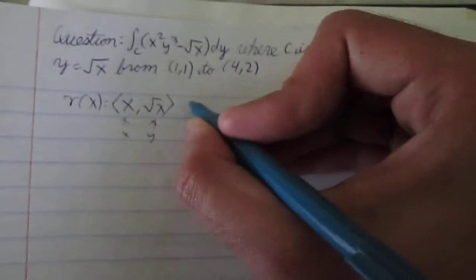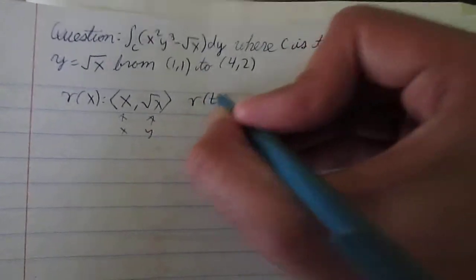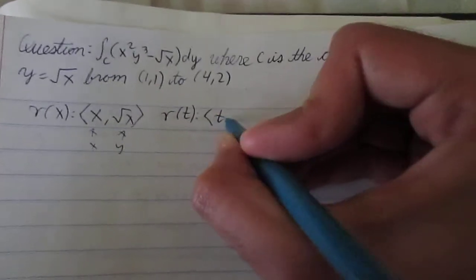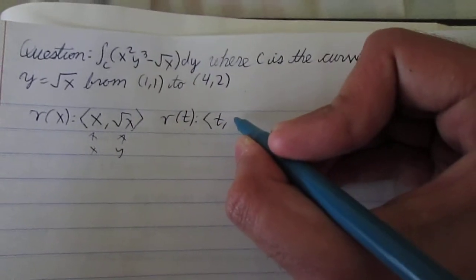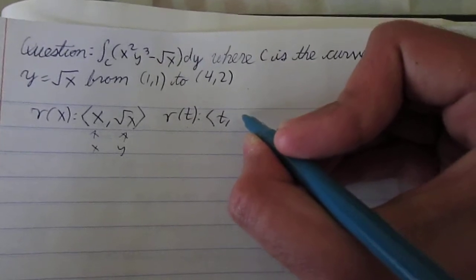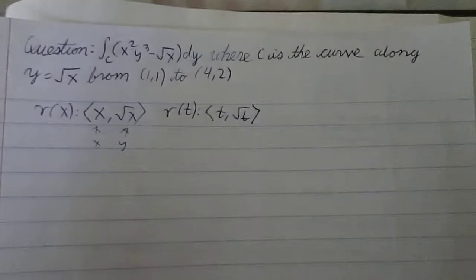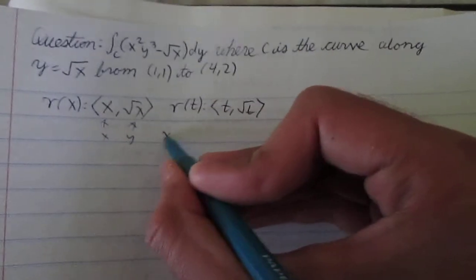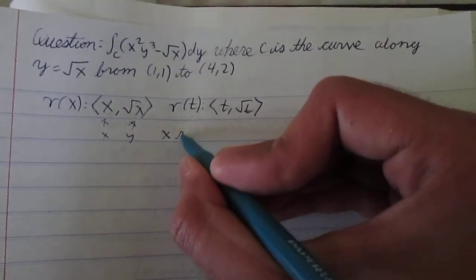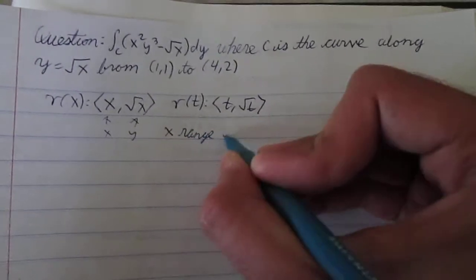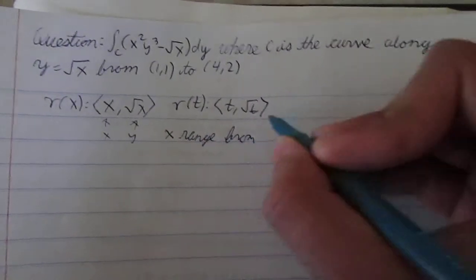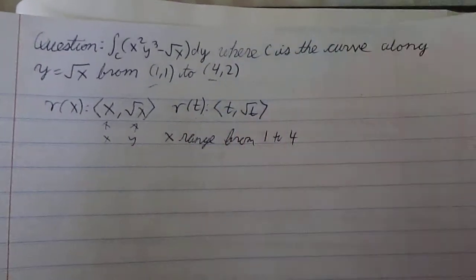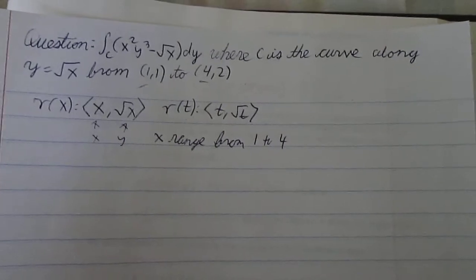You probably may have seen this in terms of t before, where you can parametrize x as t and y as a function of t. Either way, either we use x or t, it doesn't really matter, but it's going to range from 1 to 4. As you can see here, 1 and 4, that's what we're ranging from.